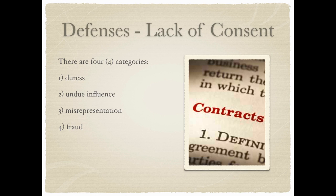Undue influence means you've been convinced to do something by somebody who wields a special relationship over you — for example, your pastor saying go ahead, sign your house over to the church. Maybe you really don't want to do it, but you feel you'd better because everybody's going to look at you funny if you don't. That's not really consent — you're not 100% behind this. You could later argue the contract was signed because of undue influence.